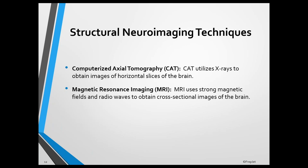Structural neuroimaging techniques are used to identify structural changes due, for example, to strokes, tumors, blood clots, degenerative diseases, and infections, and include computerized axial tomography and magnetic resonance imaging.